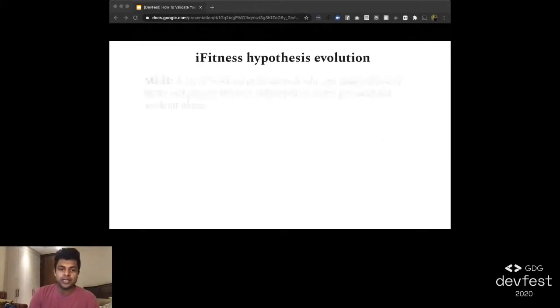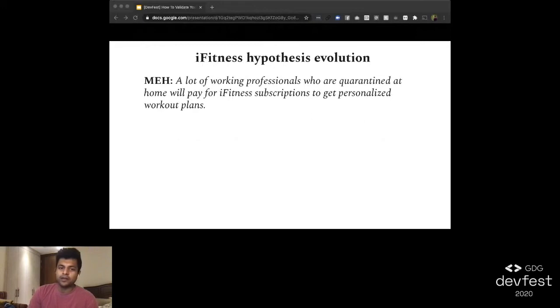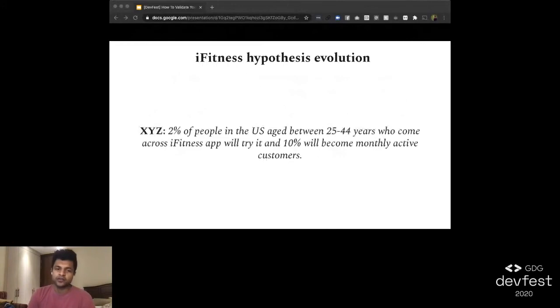Now, just to summarize, let's look at the evolution of iFitness. First, we started with the market engagement hypothesis, which was a lot of working professionals who are quarantined at home will pay for iFitness subscriptions to get personalized workout plans. Next, we converted that into an XYZ format, which was two percent of people in the U.S. aged between 25 and 44 years who come across iFitness will try it, and 10 percent will become monthly active customers. And then finally, we had the hyper zoomed hypothesis, which was two percent of people in Facebook's Bay Area fitness group who see my post about $20 iFitness subscriptions will visit our website and submit their email address to be invited to the beta. This is great. This is a lot of progress.